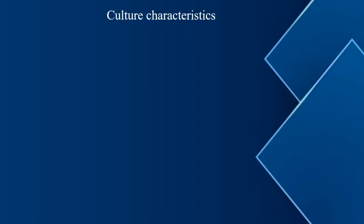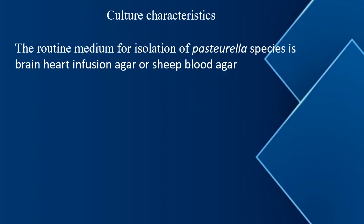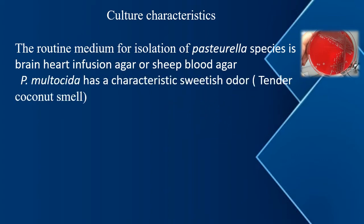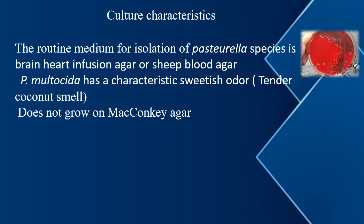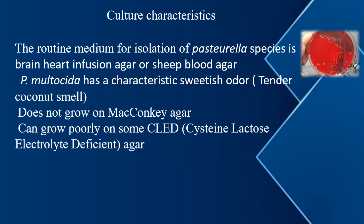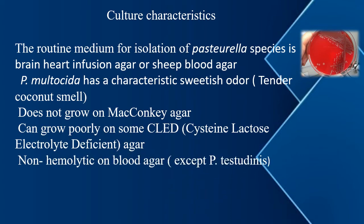Next is culture characteristics. The routine media for isolation is brain heart infusion or sheep blood agar. Pasteurella multocida has a characteristic Swedish odor. It can grow on nutrient agar, but remember it cannot grow on MacConkey agar. It cannot grow there because it is a non-lactose fermentor. It can grow poorly on cysteine lactose electrolyte deficient agar and is non-hemolytic on blood agar, except Pasteurella testudinis.